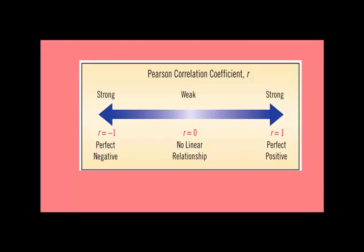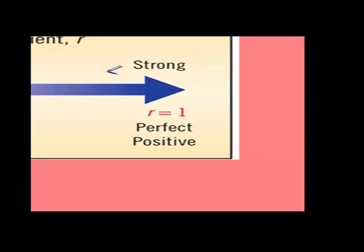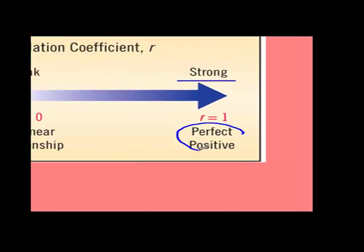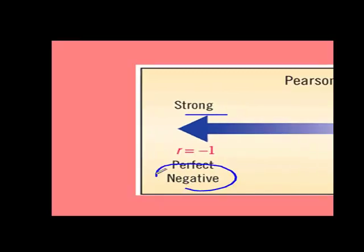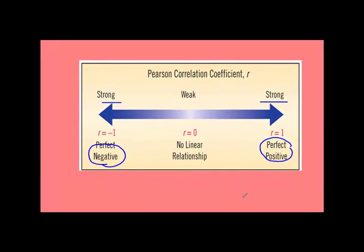The slope is a measure of a relationship between the x and y variables. The closer it is to 1, the stronger it is. This could be a perfect positive 1, or it could also be a strong, perfect negative 1. Anything that's close to 1 is considered strong.